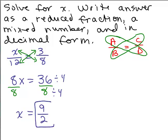So there it is as a reduced fraction but it also says to write as a mixed number. How do we do that? 9 divided by 2 is 4 with a remainder of 1. So that's 4 and a half.